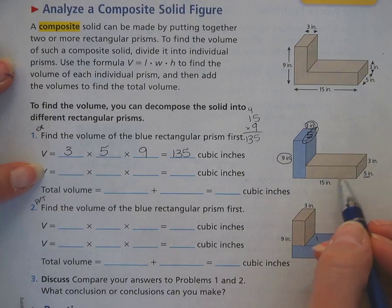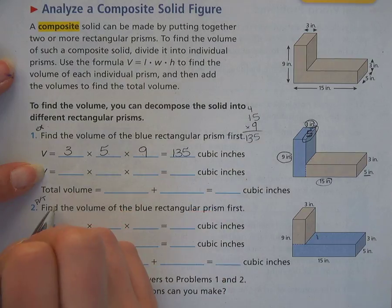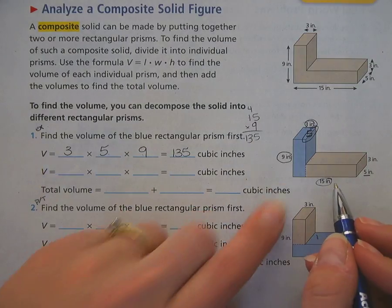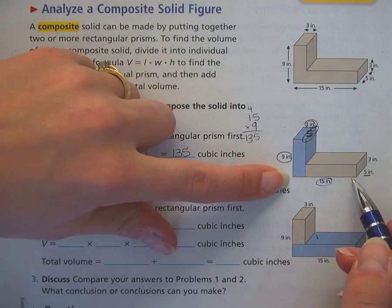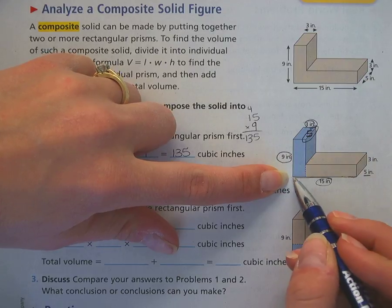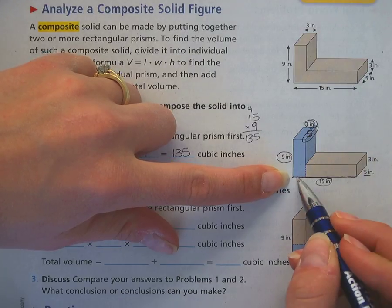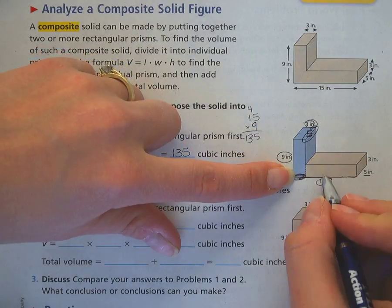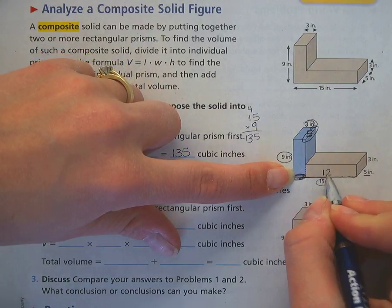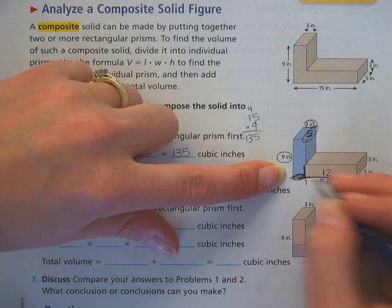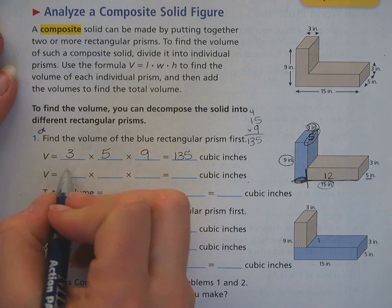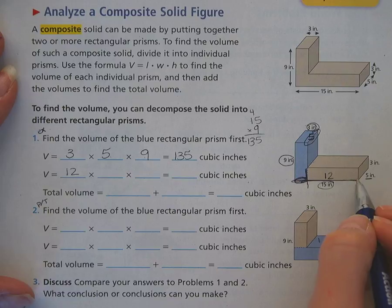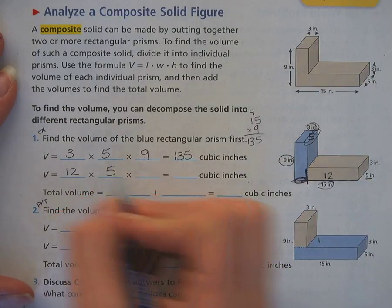Now we're going to find the volume of the tan one. So we have fifteen is my length. Wait a minute. Actually, this fifteen is the whole length, isn't it? So if I do fifteen here, I'm not talking about this part. So I need to subtract this three inches off of it, so this one actually becomes twelve. So this becomes twelve times my width, five, times my height, three.